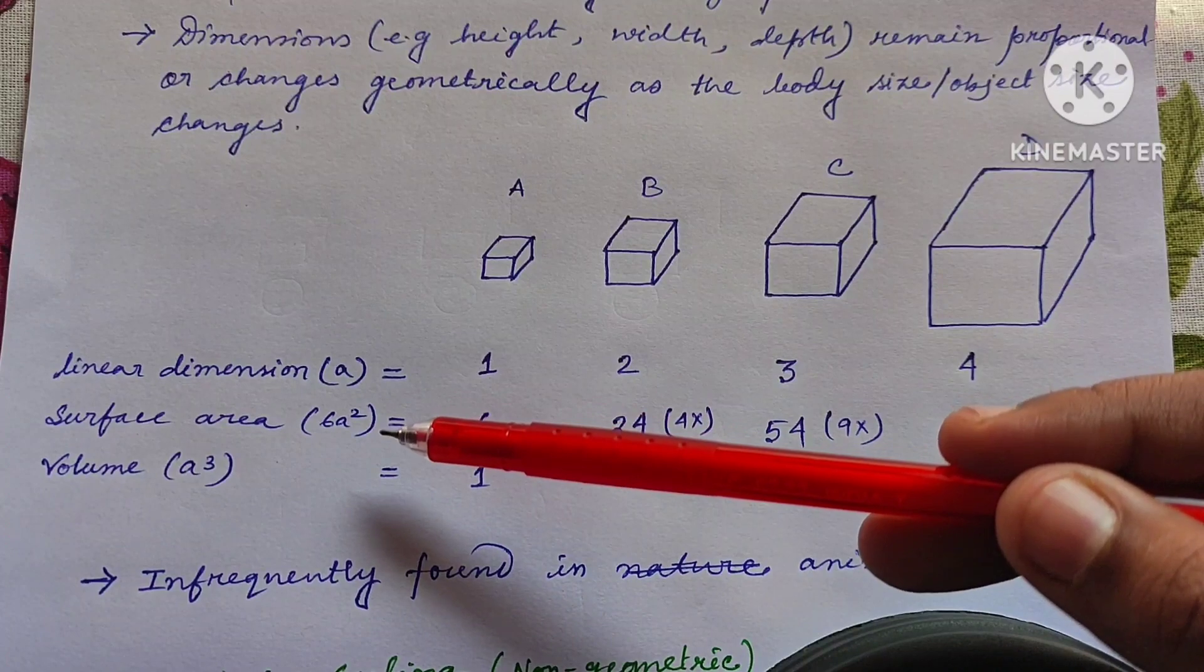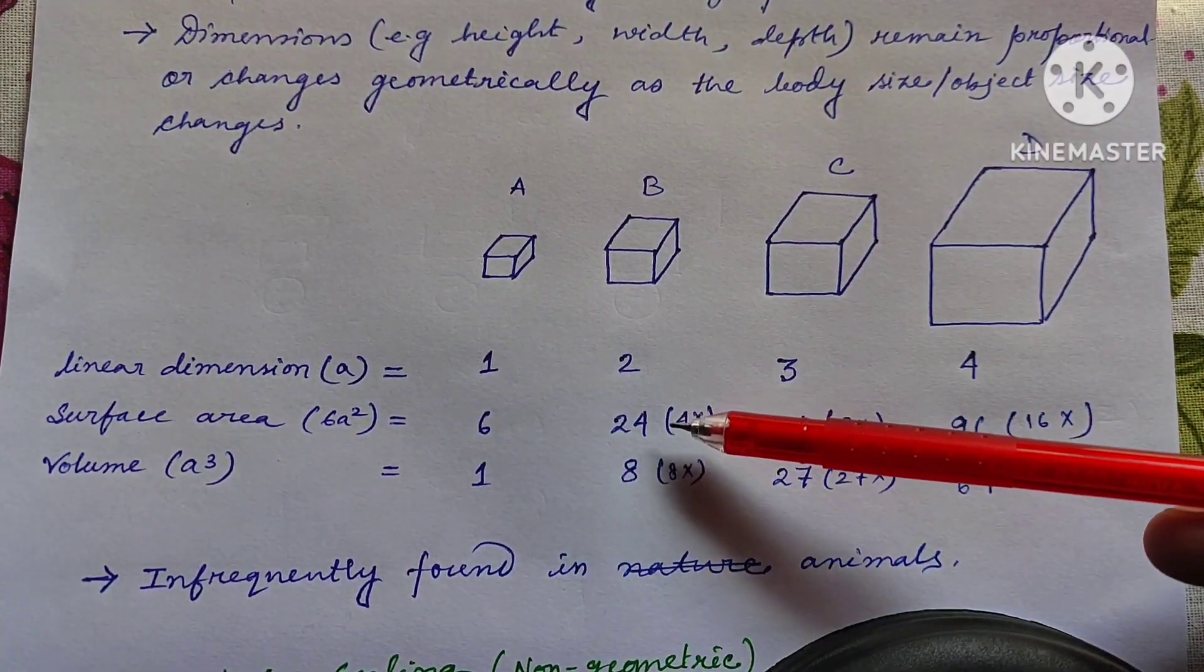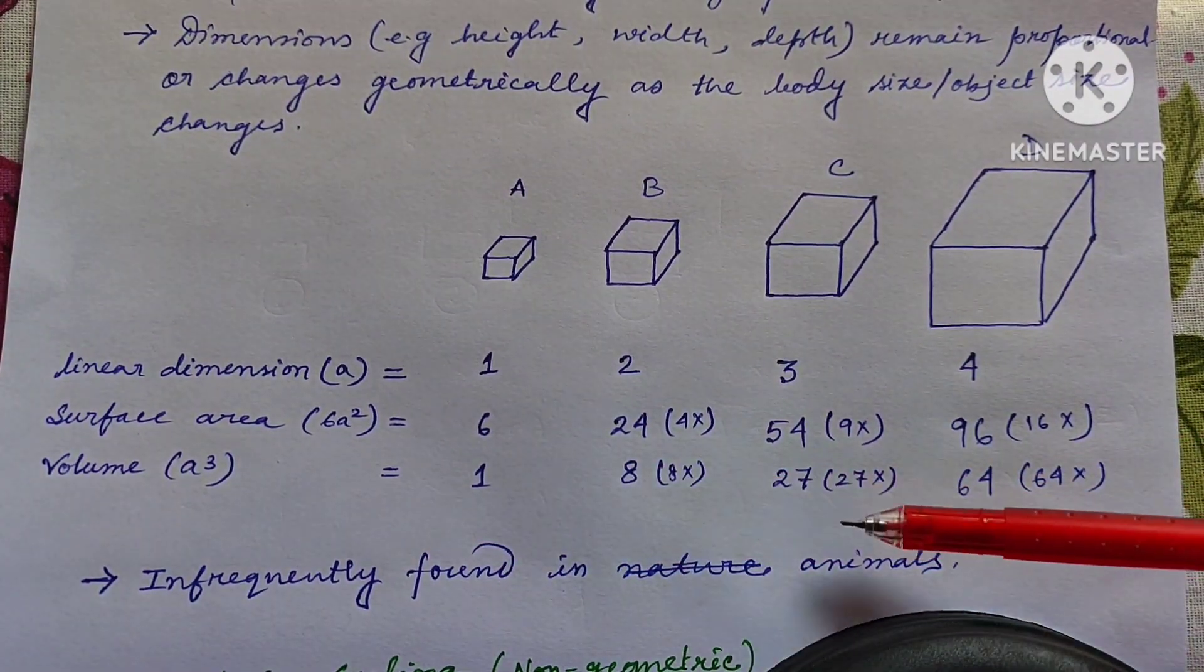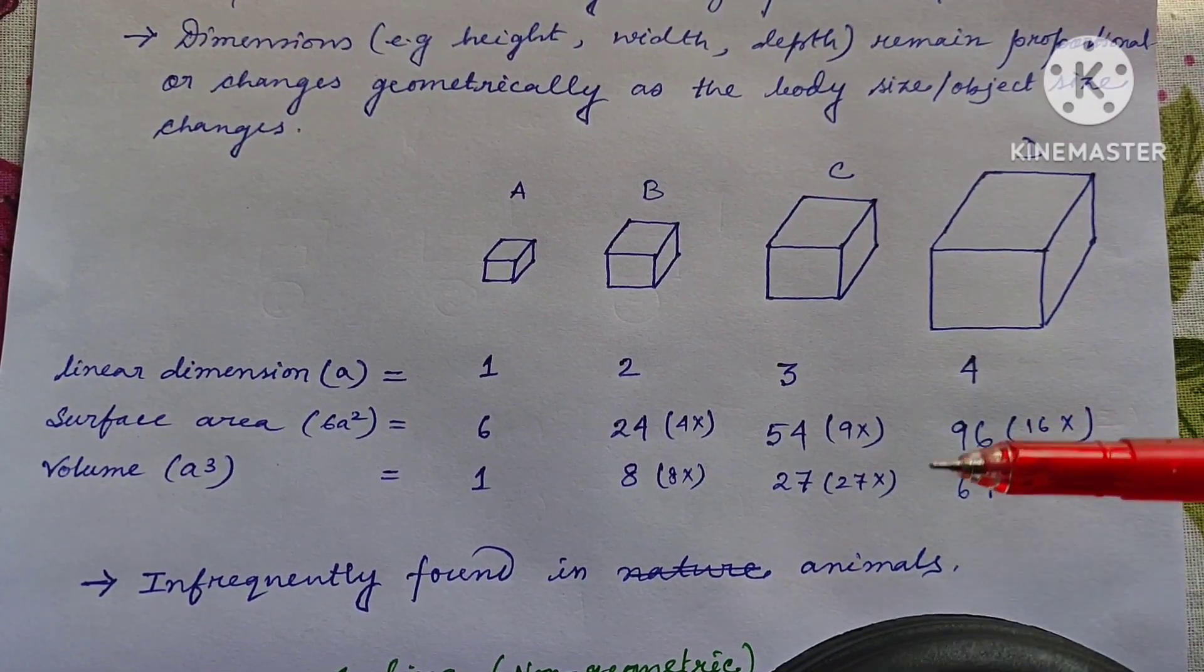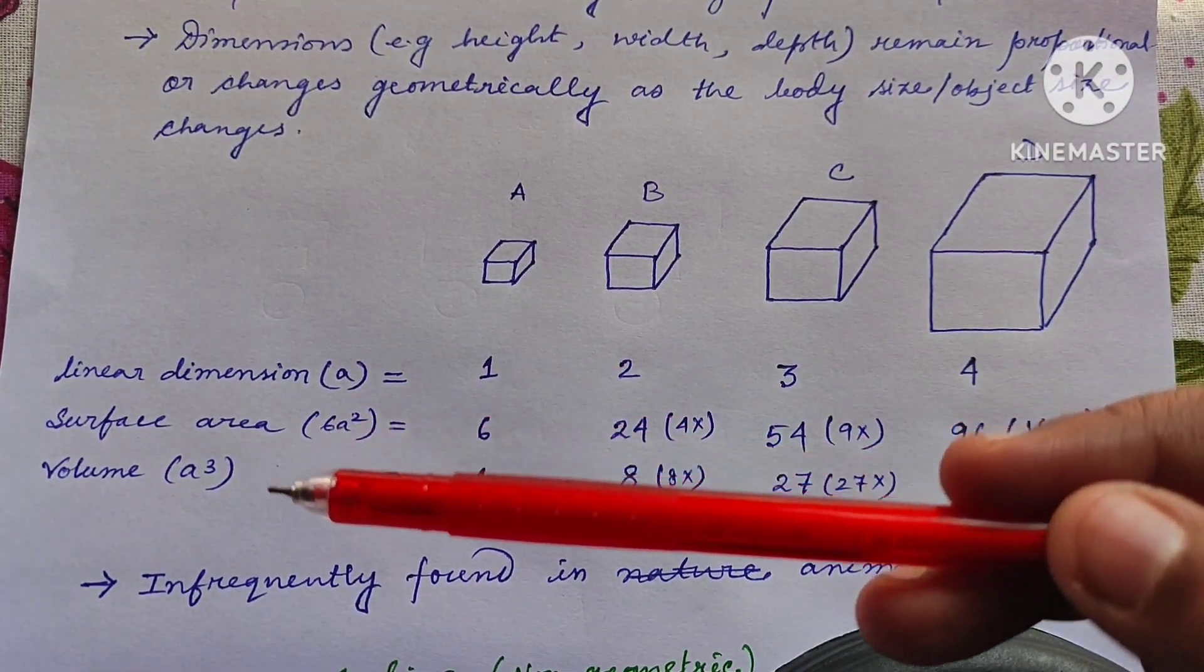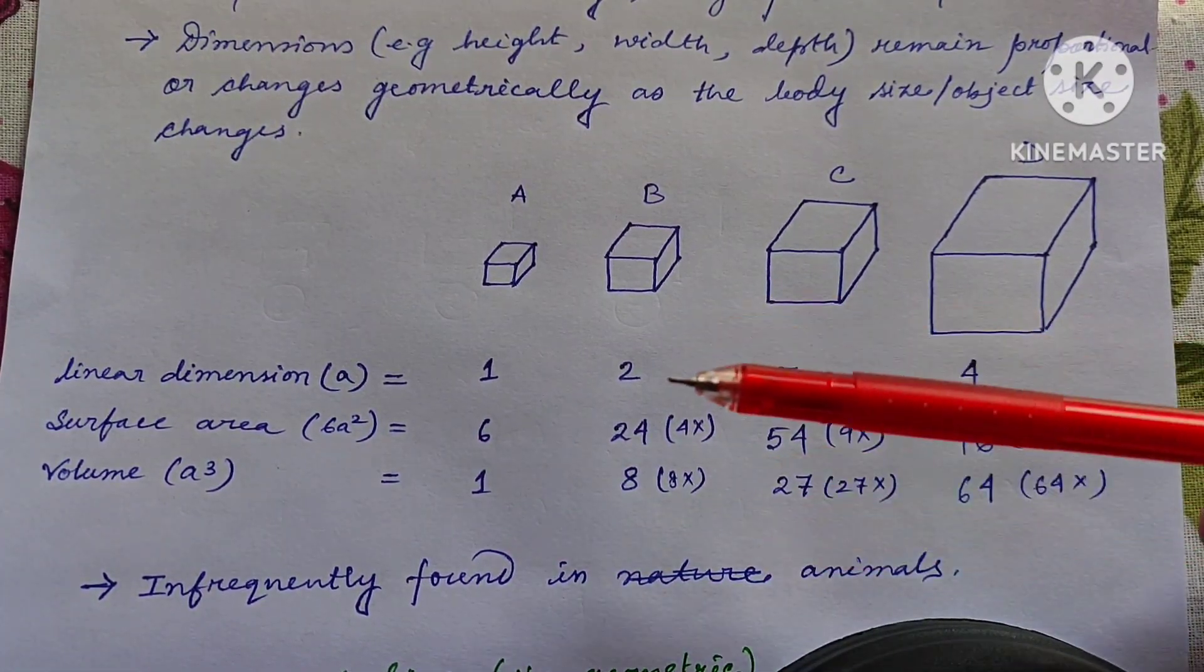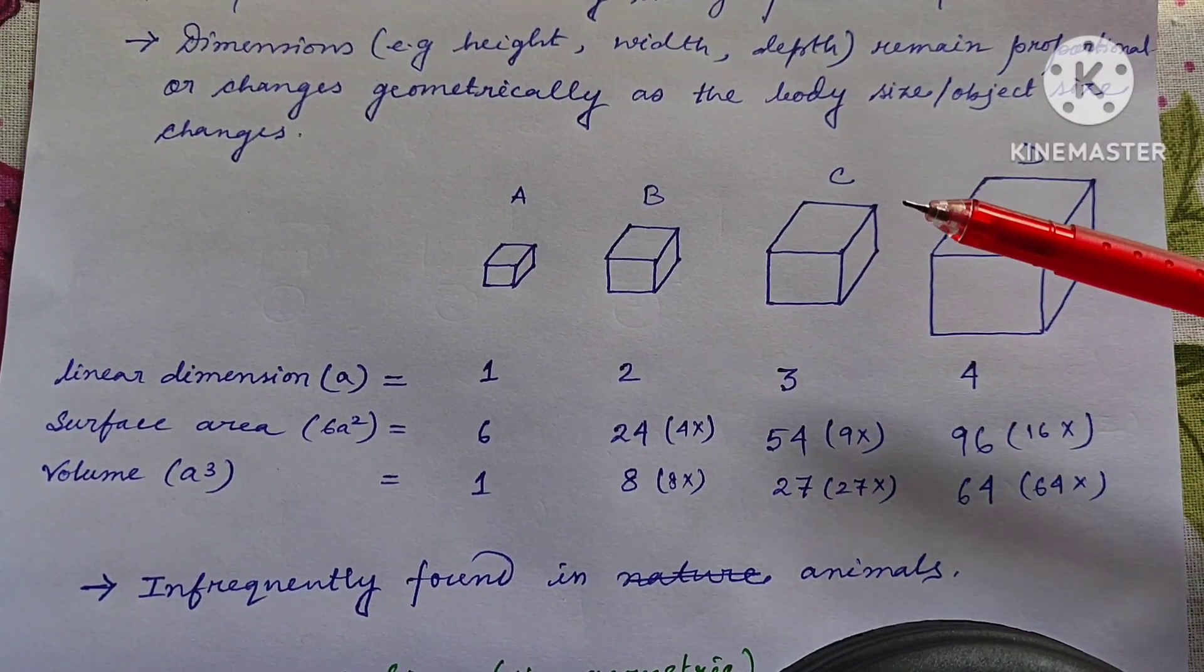According to that their surface area, that is 6A square, also increases from 6 to 24 then 54 then 96, and volume, that is A cube, also increases from 1 to 8 to 27 to 64. So here you can see all the dimensions like linear dimension or surface area or volume of the cube changes proportionally or changes geometrically according to its change in body size.